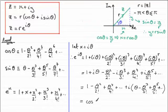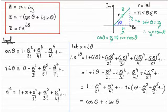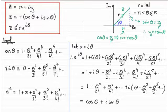So we've got the result: e to the power i theta equals cosine theta plus i sine theta. Therefore, the complex number Z, which was in the form R times (cos theta plus i sine theta), can now be written as Z equals R times e to the power i theta. This is another form we can use to express complex numbers, and we'll be using this form a lot in later tutorials.